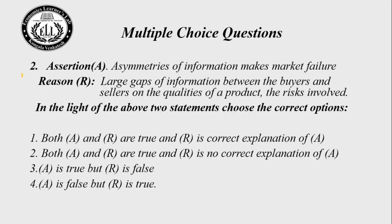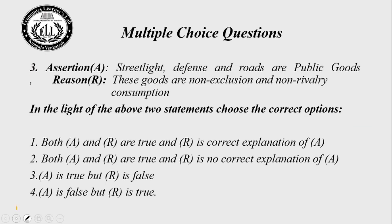Question number 2. Assertion A: Asymmetric information makes market failure. Reason R: Large gaps of information between buyers and sellers on the qualities of the product and the risk involved. Both statements are right, and R is the correct explanation of A. The right answer is choice number 1.